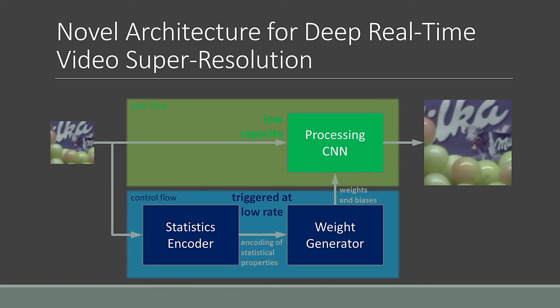Thus, processing uses local features only, but they are configured according to the global information provided by the statistics encoder. However, the entire system can be trained end-to-end.